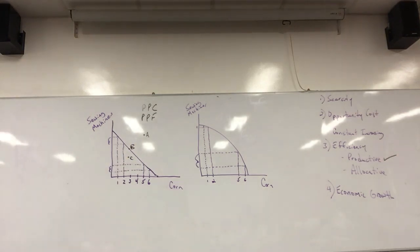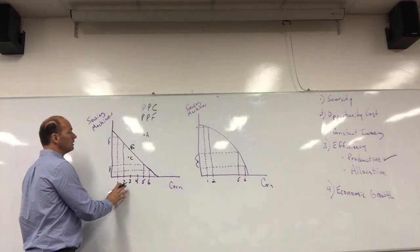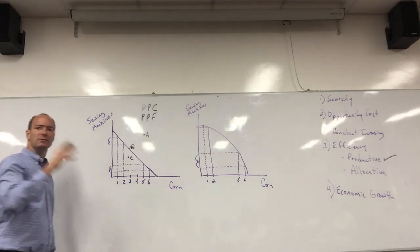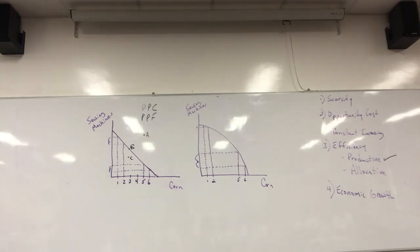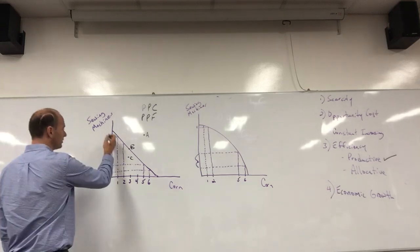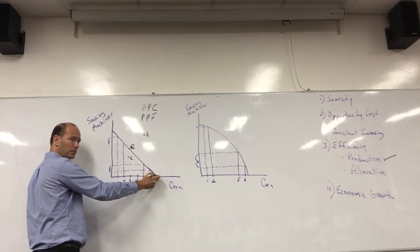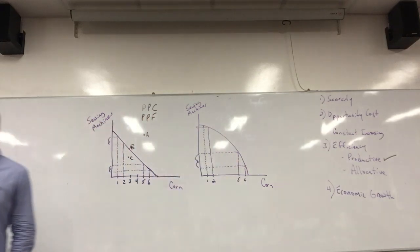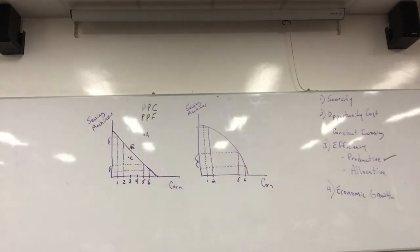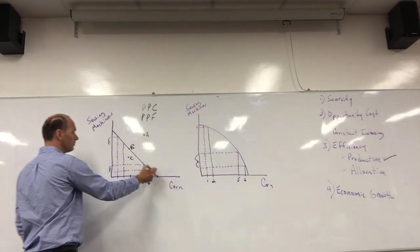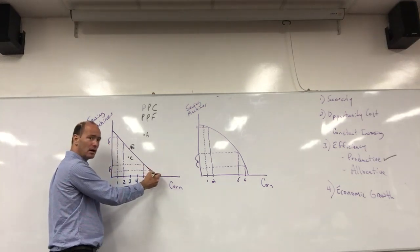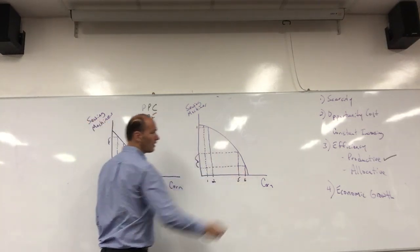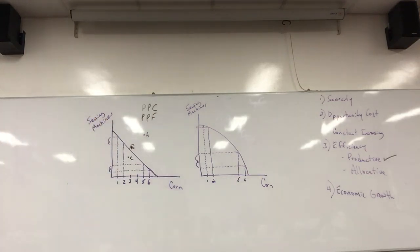Inside the curve: unemployed resources. On the curve: full employment, productive efficiency. Outside the curve: unattainable currently. When you see a production possibilities graph, you will typically see either a straight-line curve or a curve that is bowed out. The straight-line curve represents constant opportunity costs, and the bowed-out curve represents increasing opportunity costs.